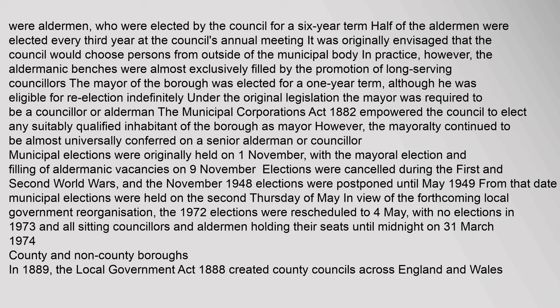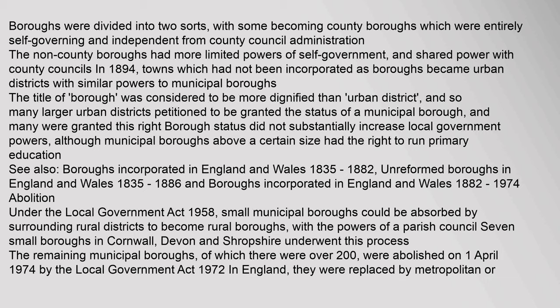In 1889, the Local Government Act 1888 created county councils across England and Wales. Boroughs were divided into two sorts, with some becoming county boroughs which were entirely self-governing and independent from county council administration. The non-county boroughs had more limited powers of self-government and shared power with county councils. In 1894, towns which had not been incorporated as boroughs became urban districts with similar powers to municipal boroughs. The title of Borough was considered more dignified than Urban District, and so many larger urban districts petitioned to be granted the status of a municipal borough. Borough status did not substantially increase local government powers, although municipal boroughs above a certain size had the right to run primary education.